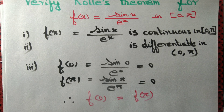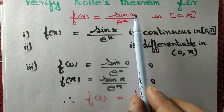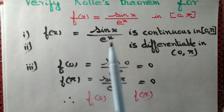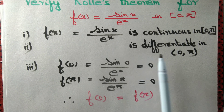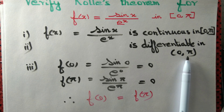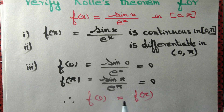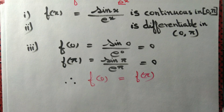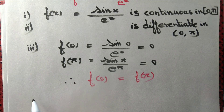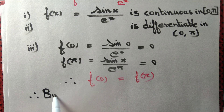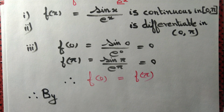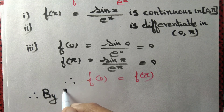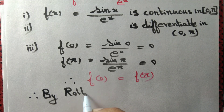So we have f(x) = sin(x) / e^x, which is continuous on the closed interval [0, π], differentiable on the open interval (0, π), and the values at the endpoints are equal. Therefore, by Rolle's theorem, since all conditions are satisfied, Rolle's theorem guarantees us the existence of a constant c.